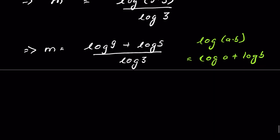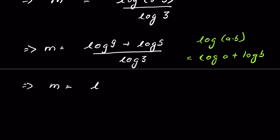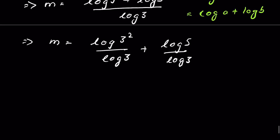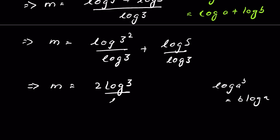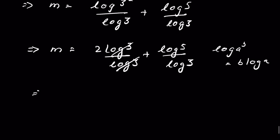Log 3 is the common denominator, so we can write m is equal to log 9 upon log 3 plus log 5 upon log 3. Now 9 we can write as 3 squared, so this is in the form of log a to the power b, which gives b log a. So this will be 2 log 3 upon log 3 plus log 5 upon log 3. This log 3 and log 3 get cancelled. Therefore m is equal to 2 plus log 5 with base 3.